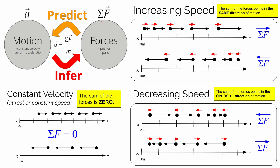if there's something left over, it's going to speed up or slow down — it's going to have an acceleration. If you add up all the forces on an object and the sum of the forces is zero, that means it's going to move at a constant velocity, which means if it's at rest, it's going to stay at rest.